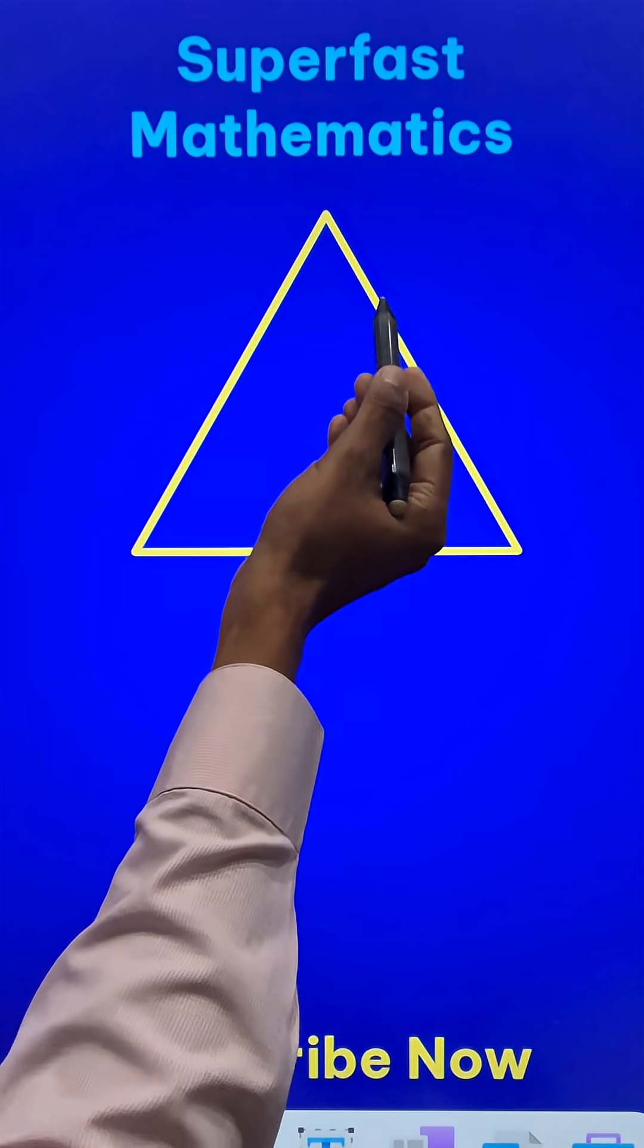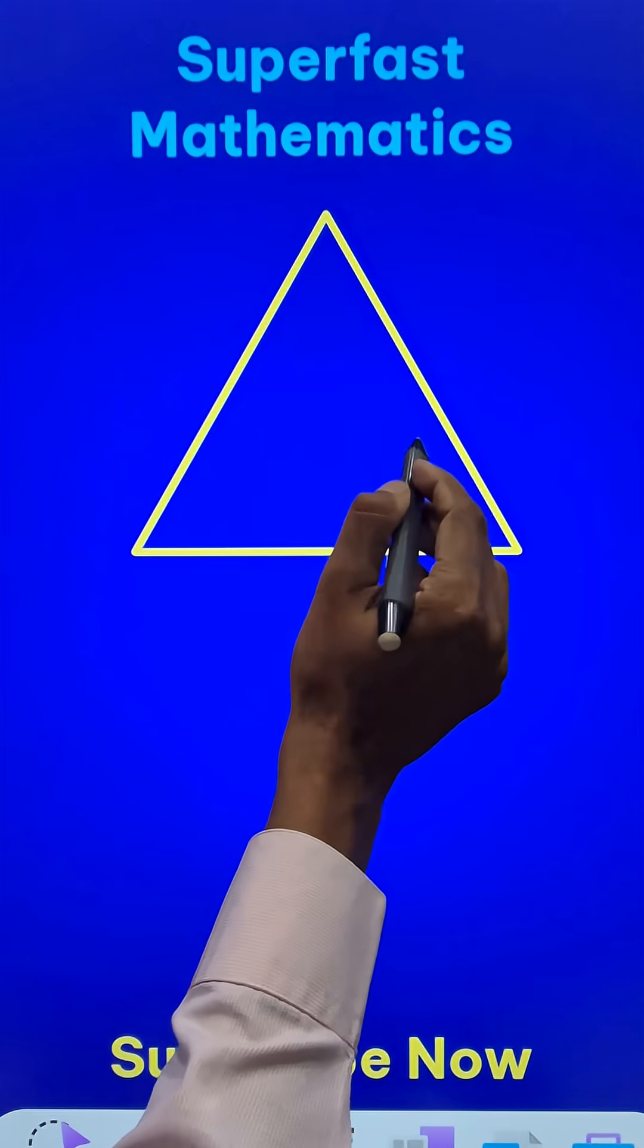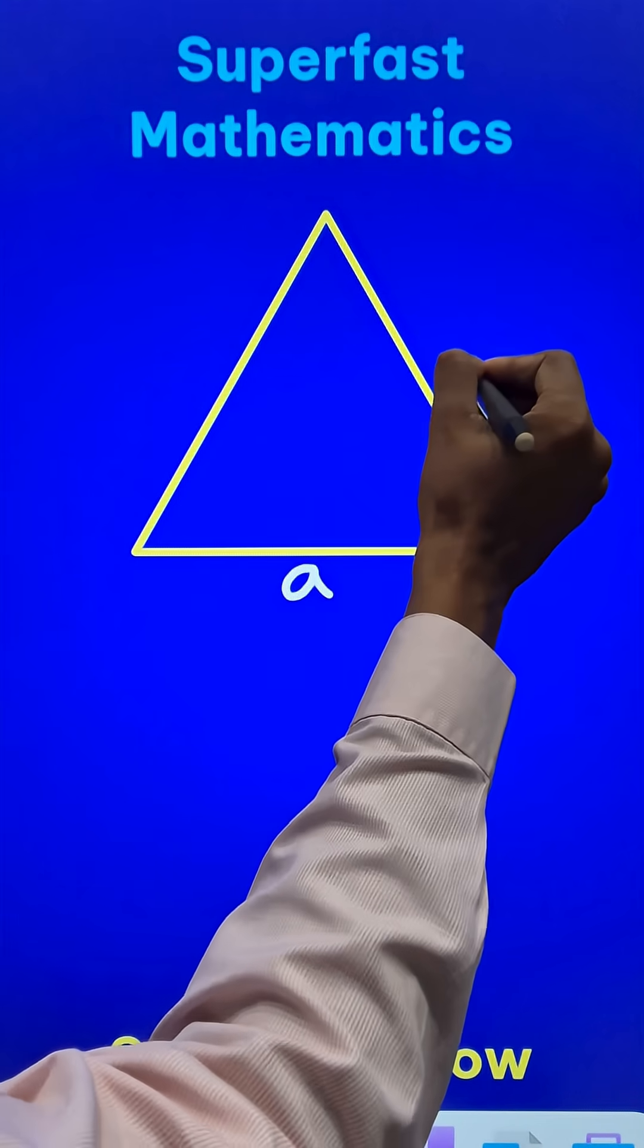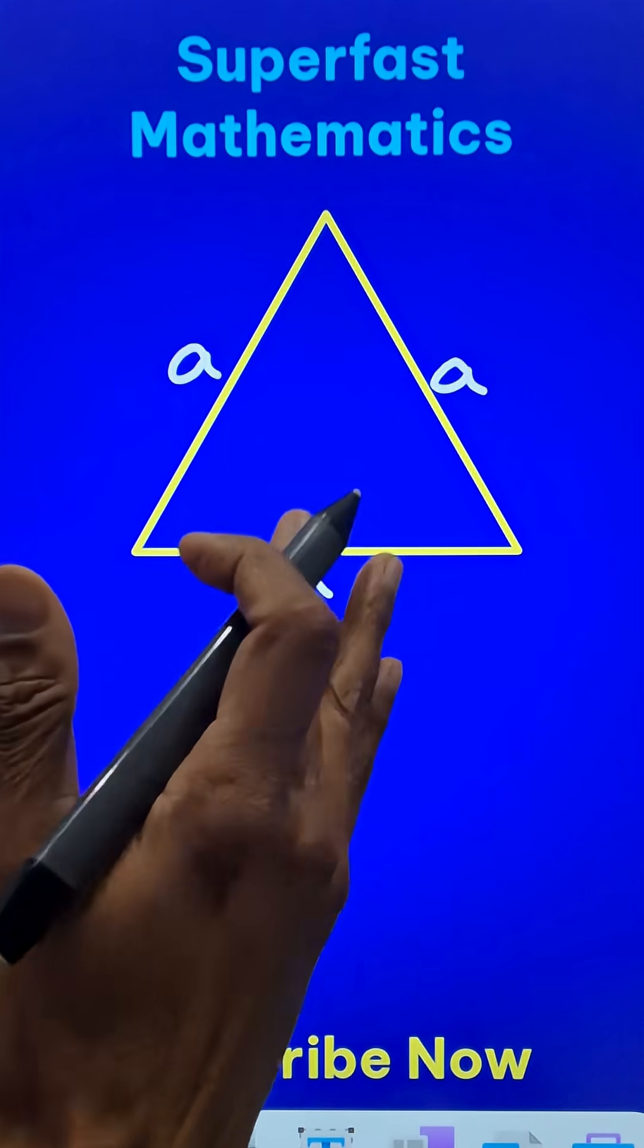Here we have an equilateral triangle and let's assume that the side of this triangle is small a. So, all the sides are small a in length.